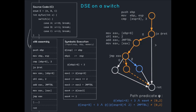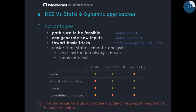Going dynamic has the advantage of having a feasible path — we're sure it's feasible. We can potentially generate new inputs, and it allows thwarting basic obfuscation tricks like code overlapping and self-modification. Compared to static and dynamic alone, it's robust and correct thanks to the dynamic aspect, and more complete because it generates new paths. The main shortcoming is scalability issues: when you obtain strong relations on the path, they might be very difficult to solve.